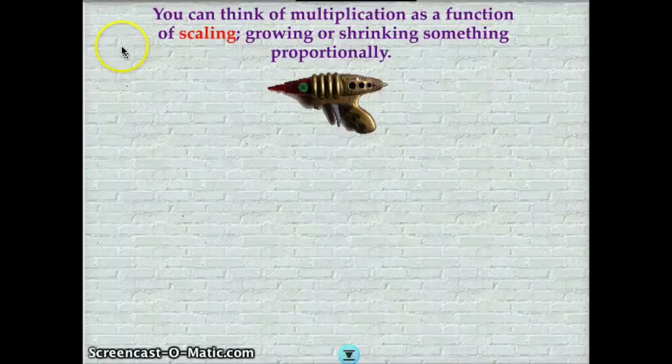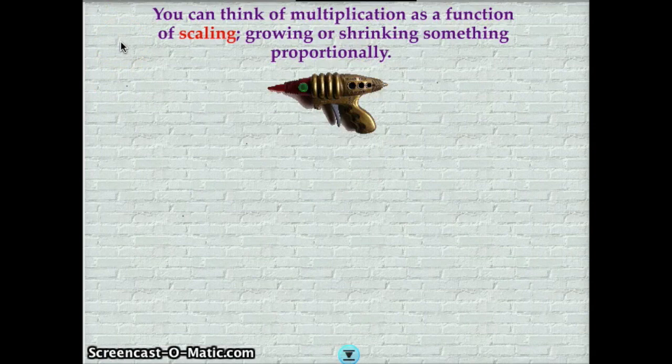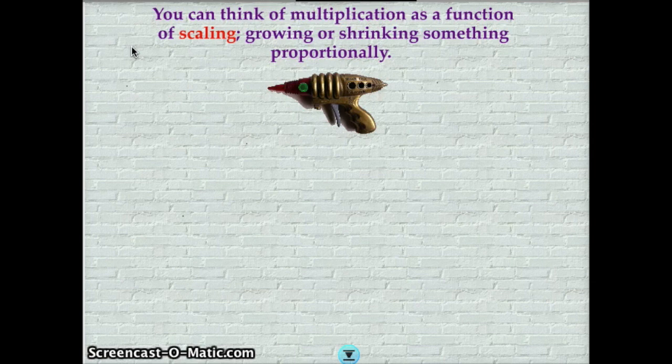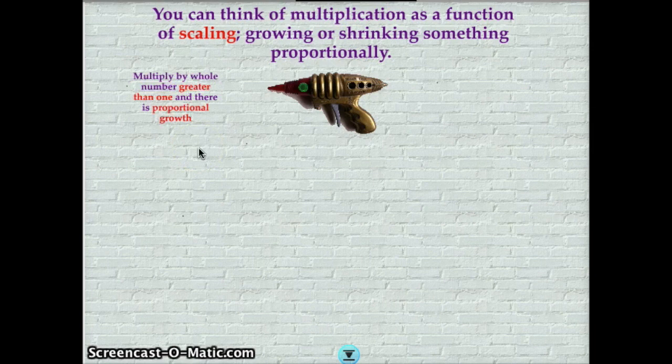So you remember how weird it was when we multiplied decimals by decimals and the product got smaller and you guys were all freaked out by that? Well, now we know why, because multiplication is not making things bigger. It's a function of scaling. It's growing or shrinking something proportionally. Now we know that if we multiply by a whole number greater than one, there is proportional growth.